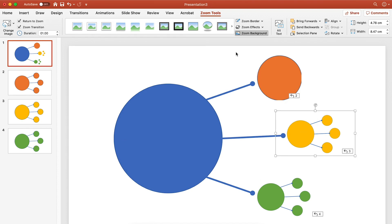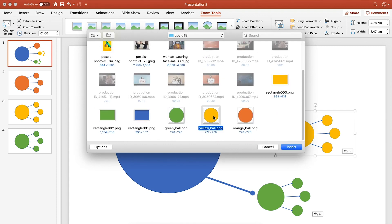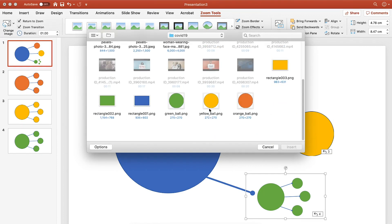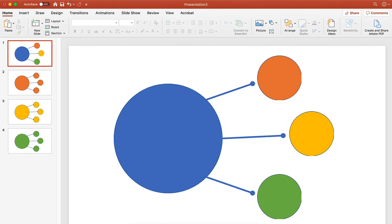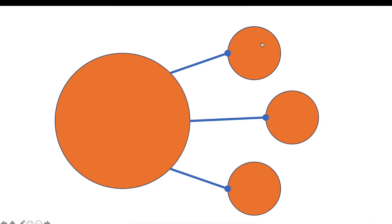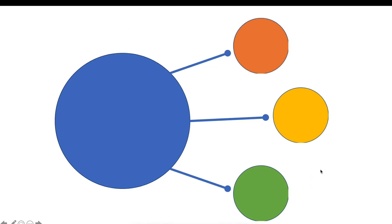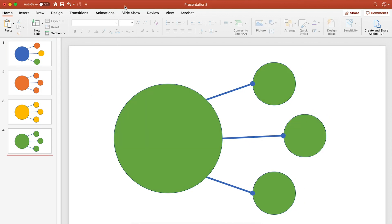For the yellow one I go to Change Image again, scroll down, and click the yellow ball — replaced. Again for the green one: Change Image, and change it to the green ball. We're all set! Now if I select and play, you'll see it works perfectly as expected — super fast in movement and very smooth. That's the first part of our Slide Zoom section.